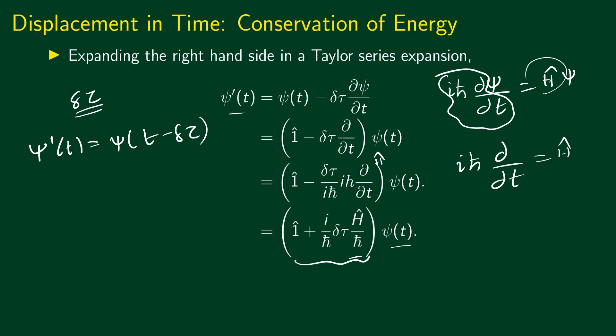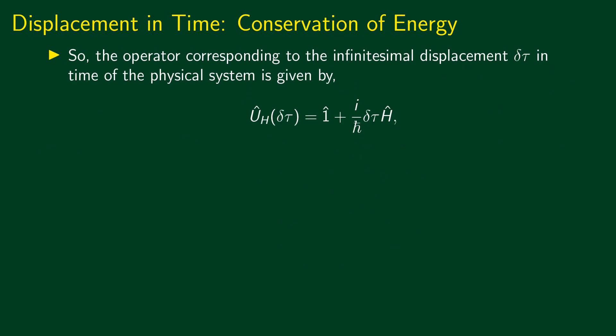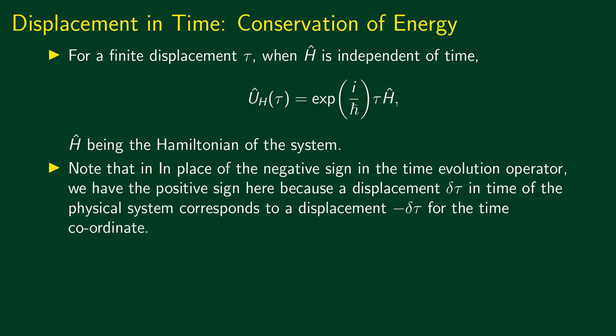This is the unitary operator corresponding to an infinitesimal displacement in time. So the operator corresponding to the infinitesimal displacement delta tau in time of the physical system can be written as U hat subscript H of delta tau, equal to the identity operator plus i divided by h bar, times delta tau times H hat. The H appearing in the subscript stands for the fact that the Hamiltonian is the generator of time translations.